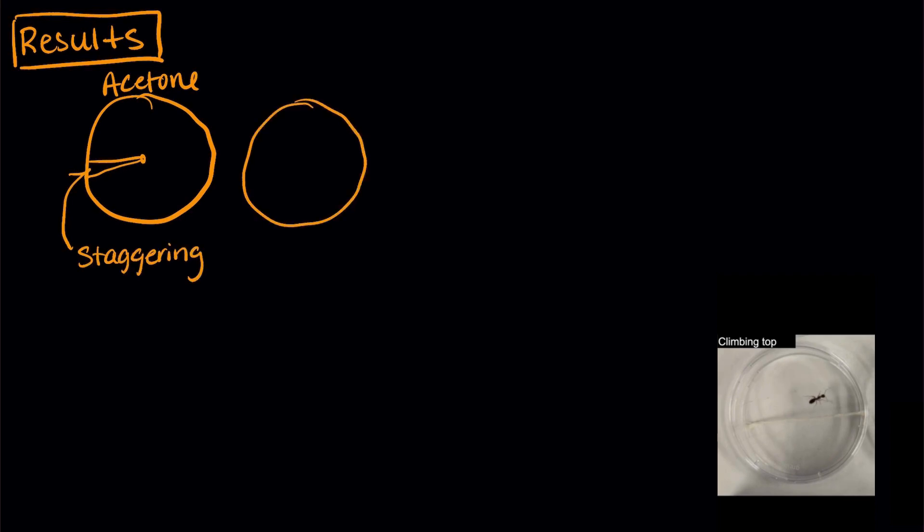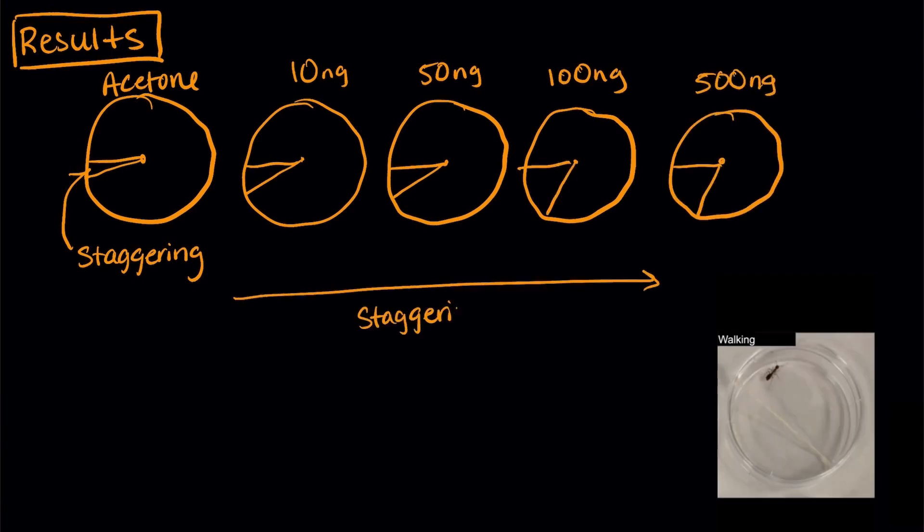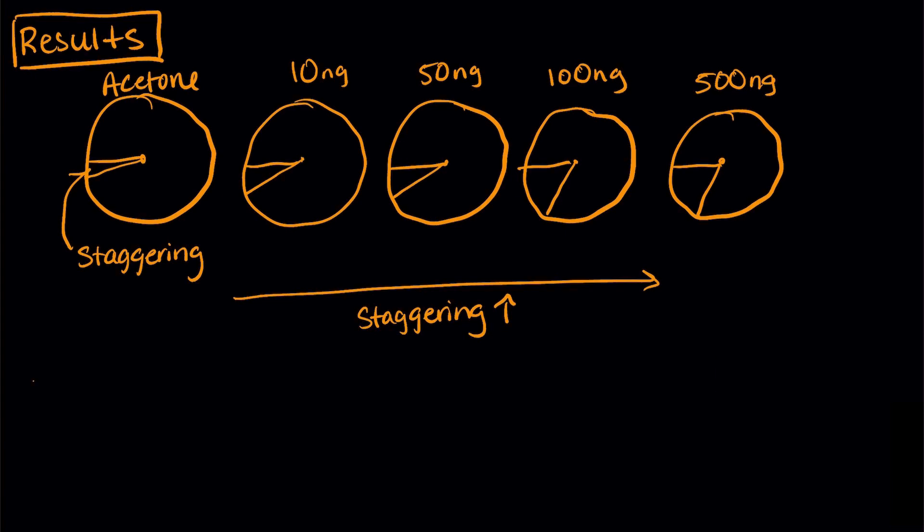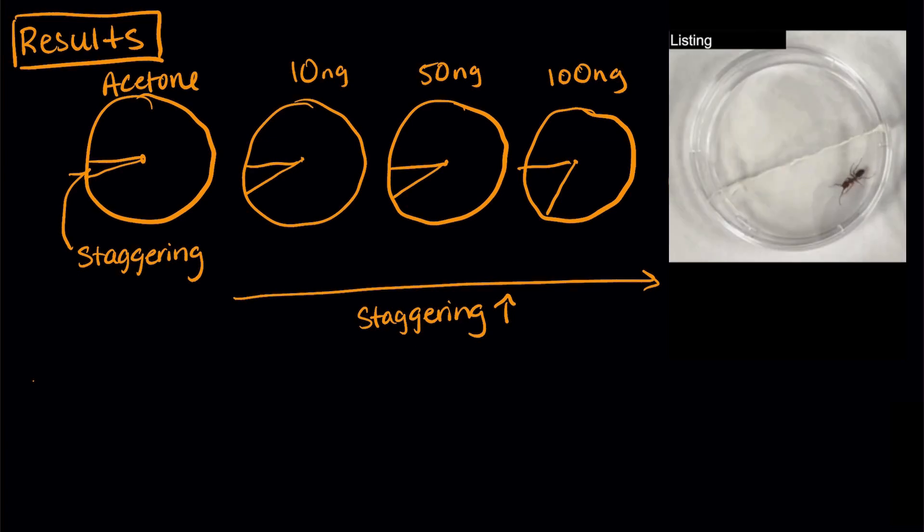Let's talk about the results now. Here you can see the video of normal behaviors again. As the amount of afflatrem increased, the ants spent more time resting and moved more slowly. Here, you can see staggering behavior increased as the concentration of afflatrem increased. Afflatrem didn't seem to affect the total distance the ants traveled, though. Here's a video of several subcategories of staggering that the researchers saw when the ants were injected with afflatrem.